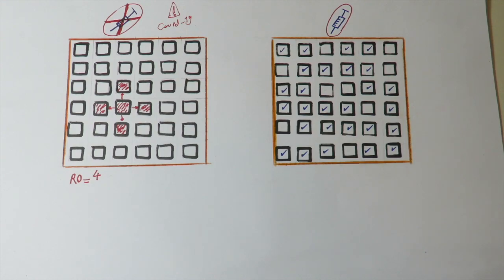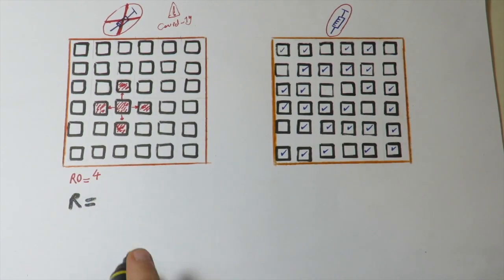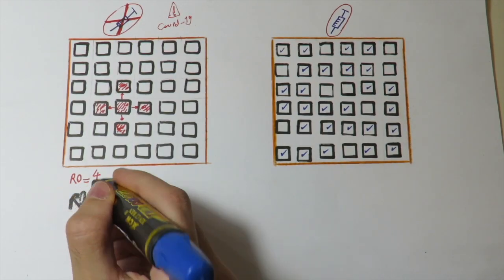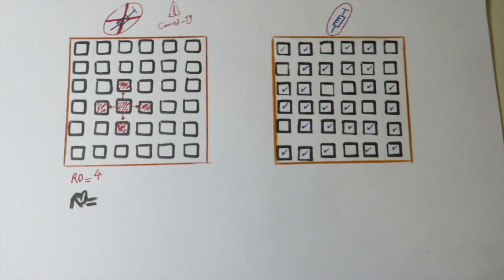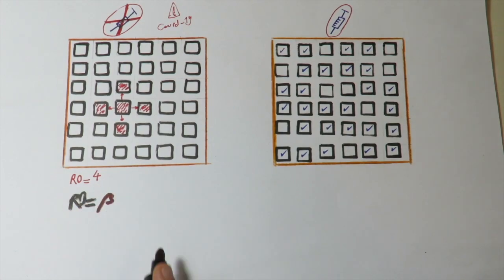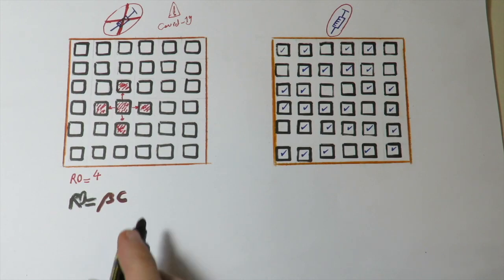Now the next question arises: How is this R0 calculated? Well, R0 is a result of multiplication of three elements: the first being beta, the second being C, and the last one, D.